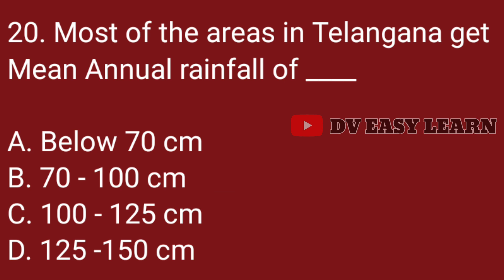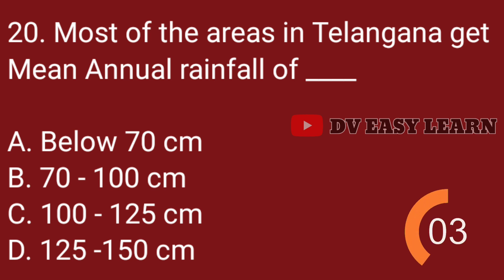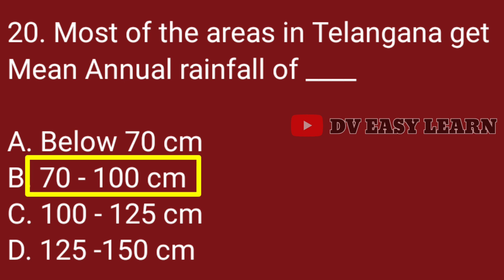Question no. 20. Most of the areas in Telangana get a mean annual rainfall of: Correct answer: 70 to 100 cm.